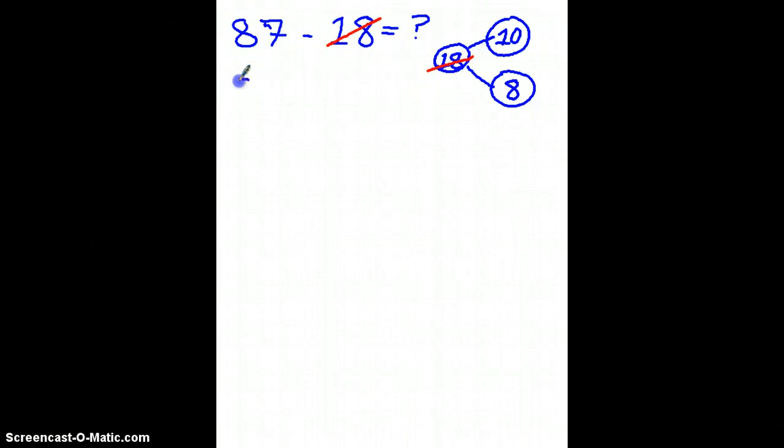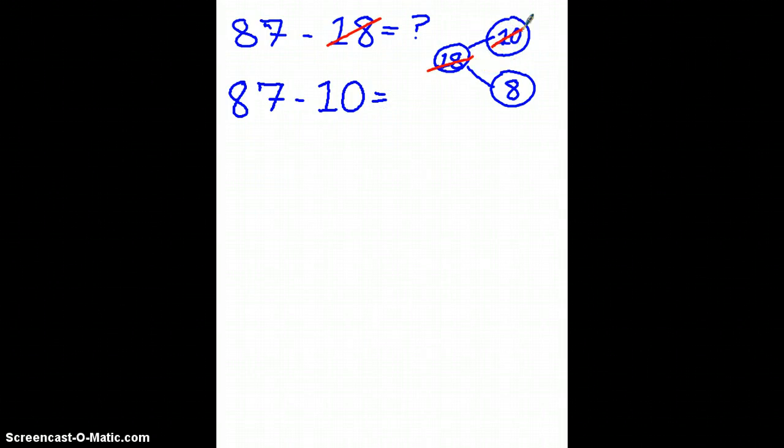My next step is to rewrite the problem, 87, but this time I'm going to subtract 10 instead of trying to do 18, because 87 minus 10 in my head is a lot easier. And of course, as before, I'm going to cross out the 10 so that I know that I used it.